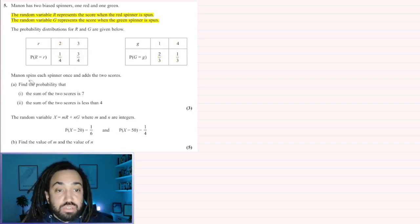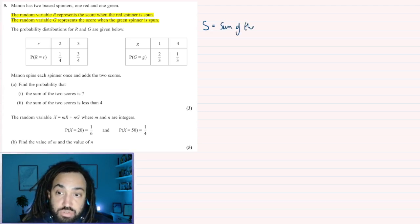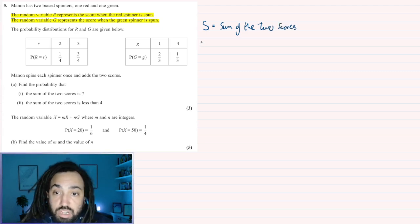It says that Mahon spins each spinner once and adds the two scores together. So we're going to let S be the sum of the two scores. Then for part AI, we need the probability that S is equal to 7.